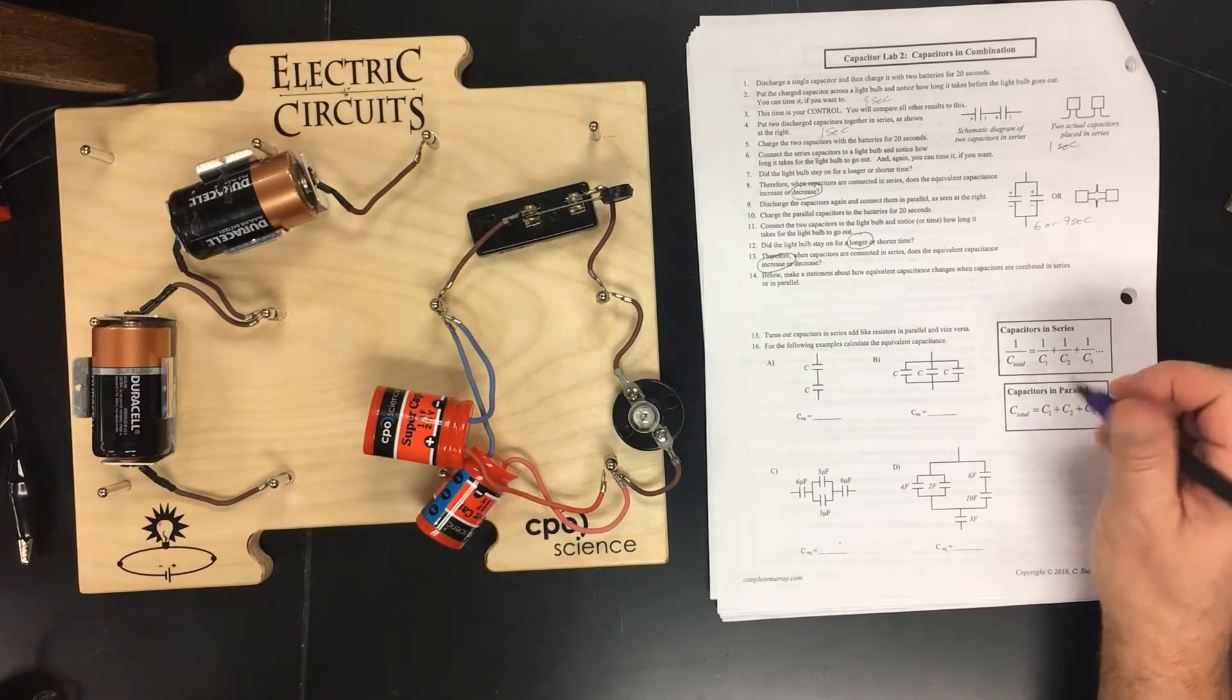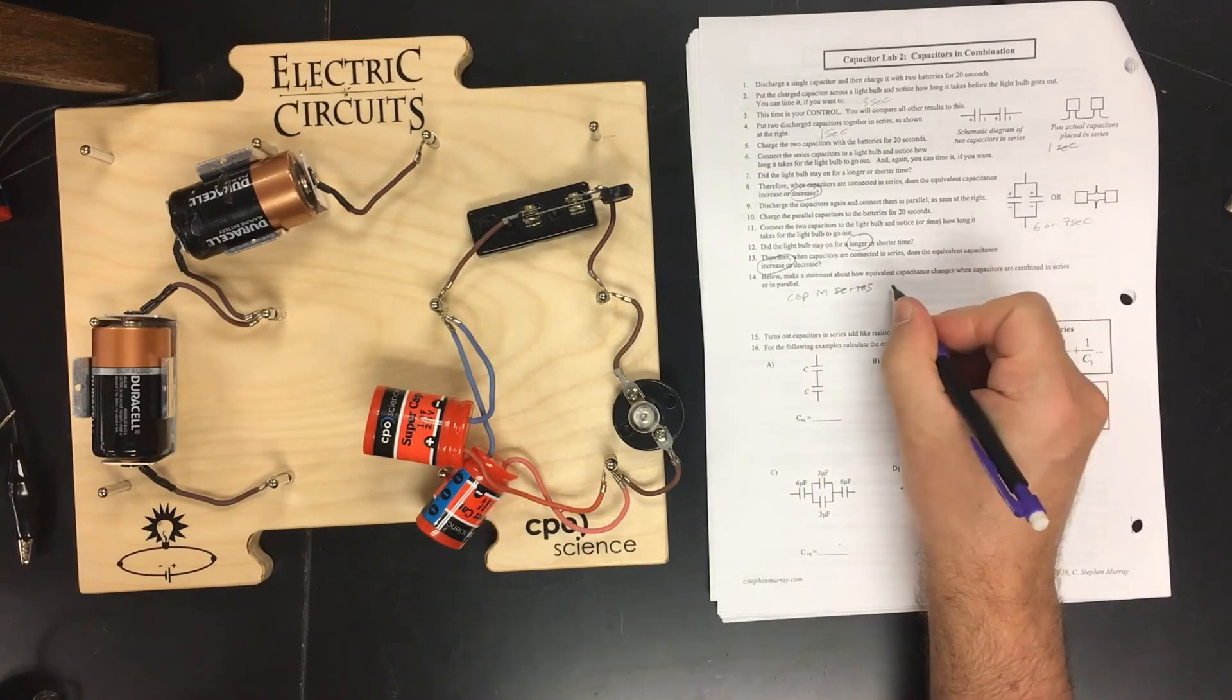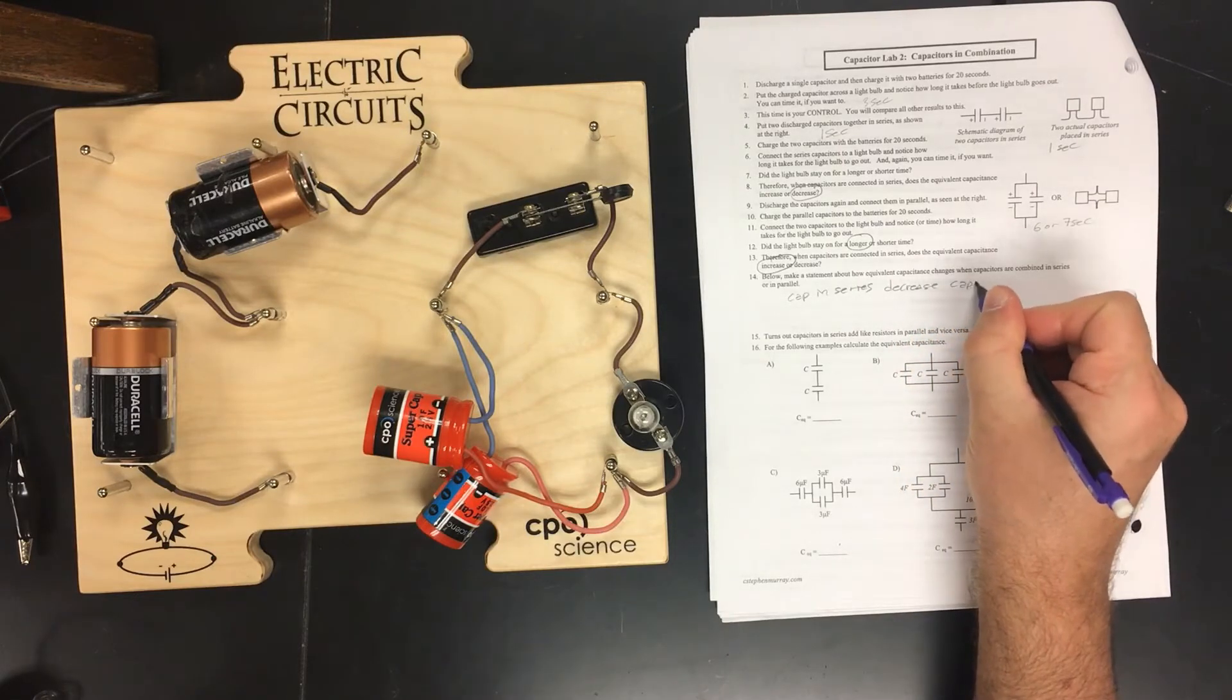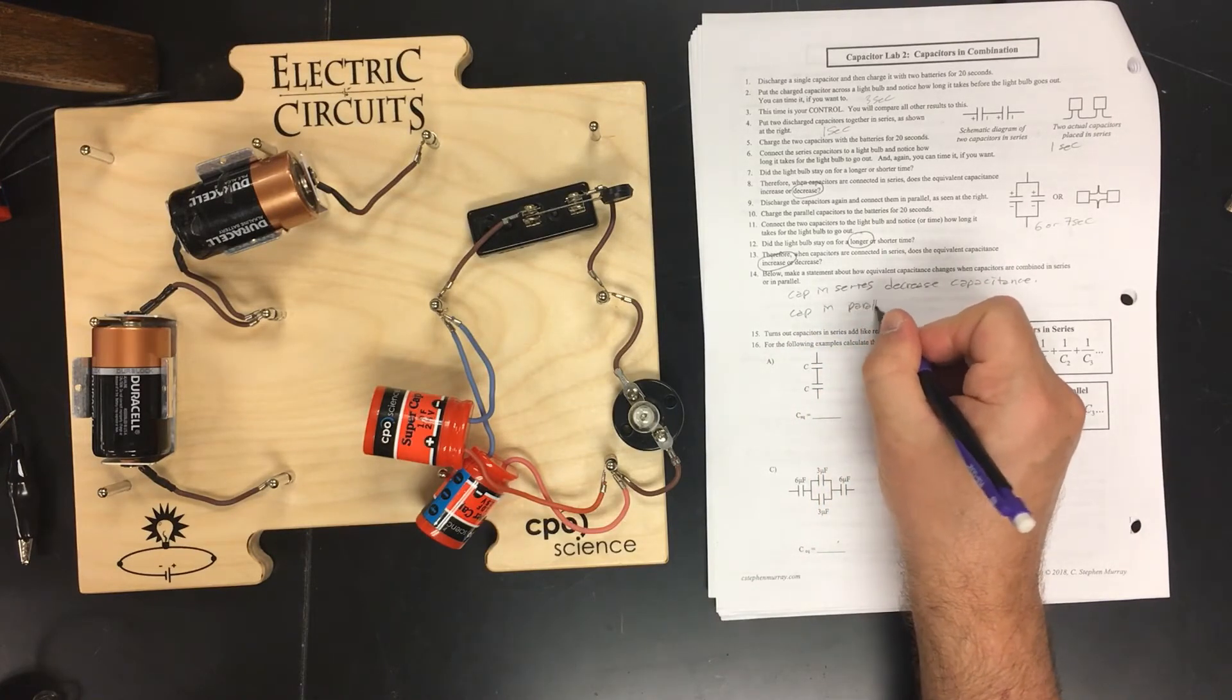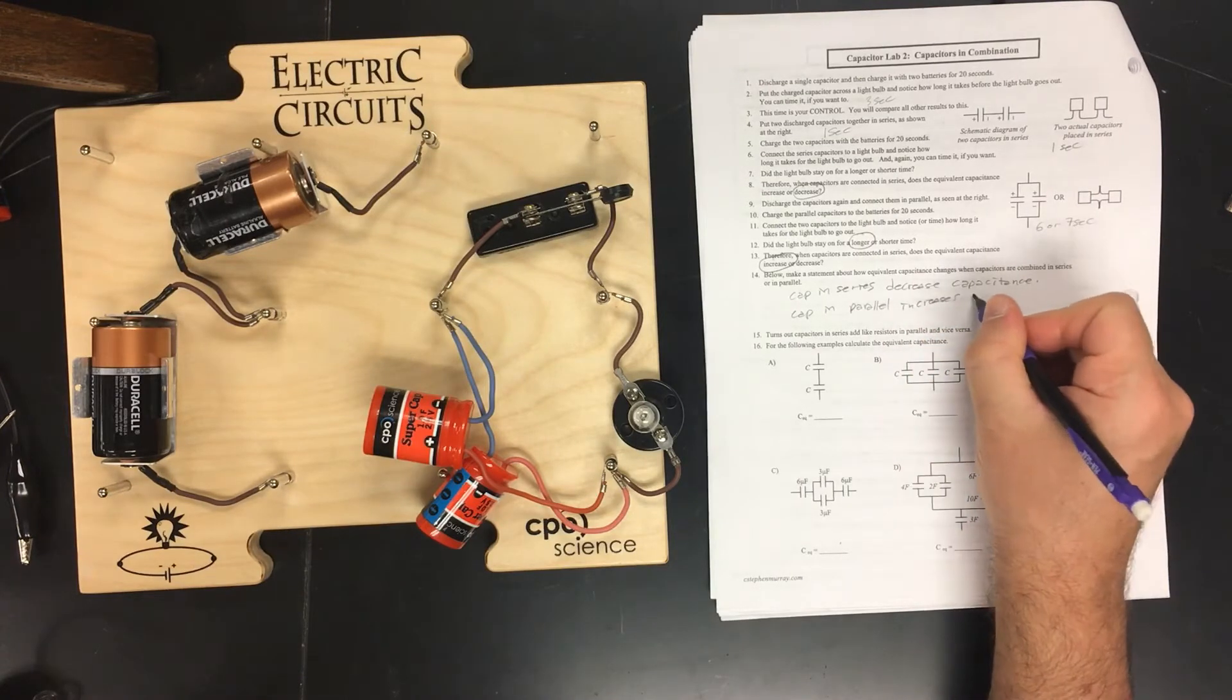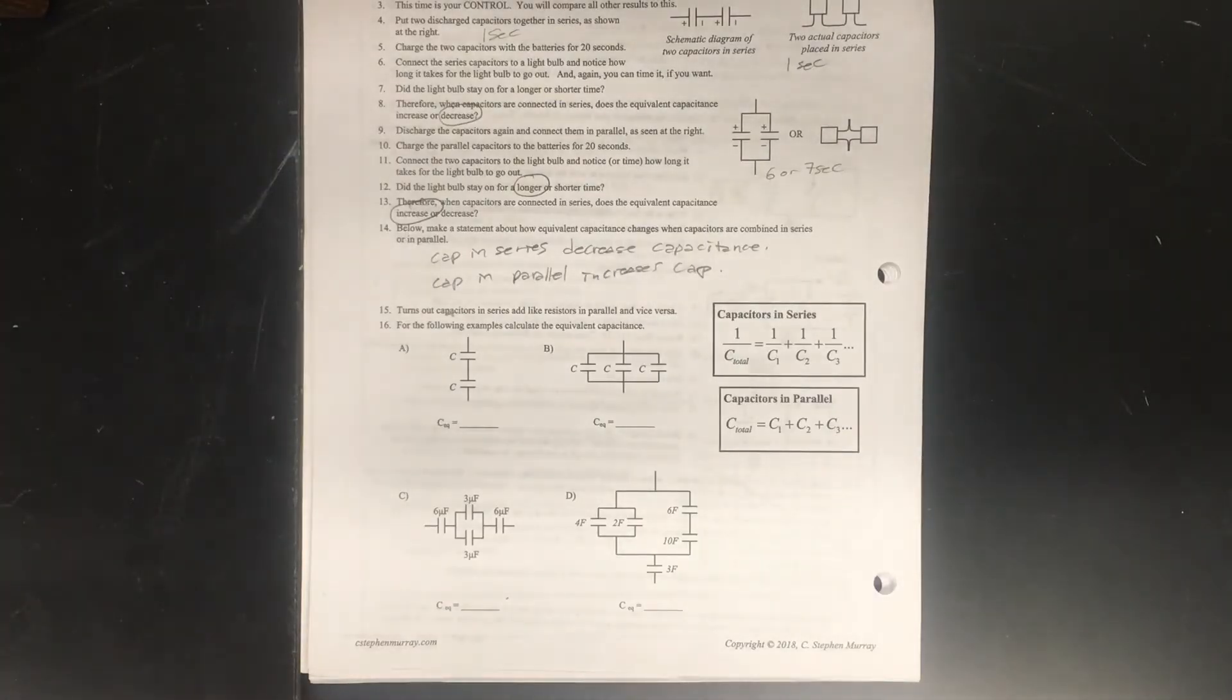So here we go. In series or in parallel, make a statement about how equivalent capacitance changes. Capacitors in series decrease capacitance. Capacitors in parallel increases capacitance. There we go. It's the opposite of resistors. Now that we've done the lab, let's do these quick calculations down here.